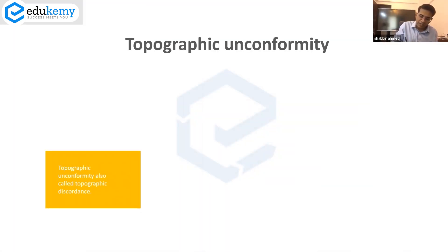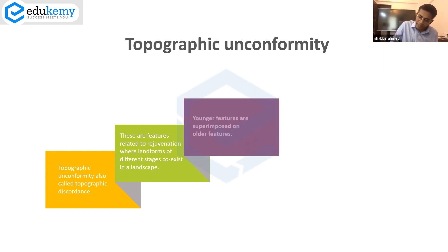These are essentially features related to rejuvenation, where landforms of different stages coexist in a landscape. Younger features are superimposed on older features.